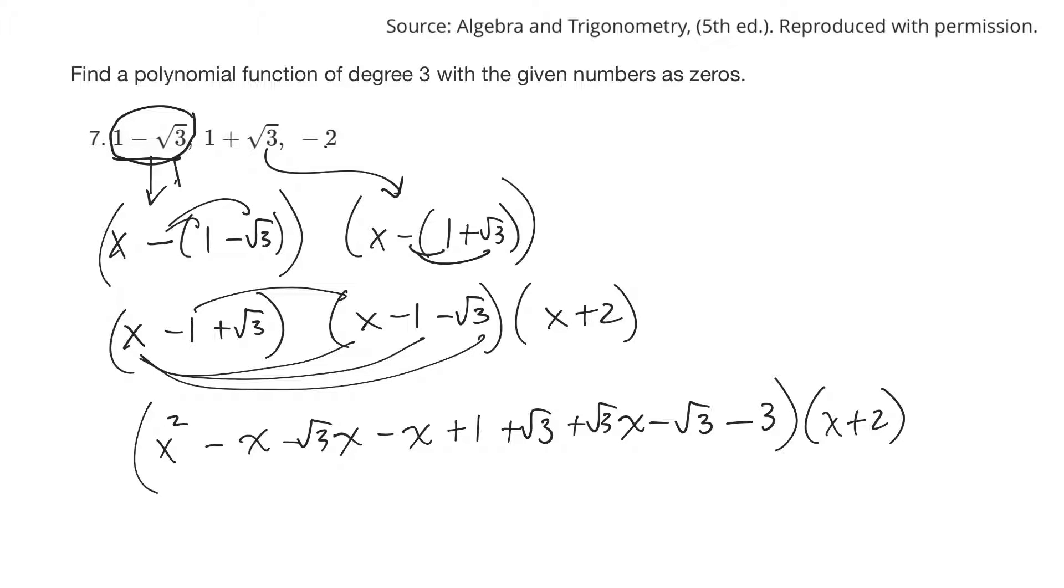Something's got to cancel here. Root 3, one's plus, one's minus. Oh no, that's a root 3x. That one goes with this one. But this one cancels with this one too. So then I'd have x squared minus 2x minus 2.